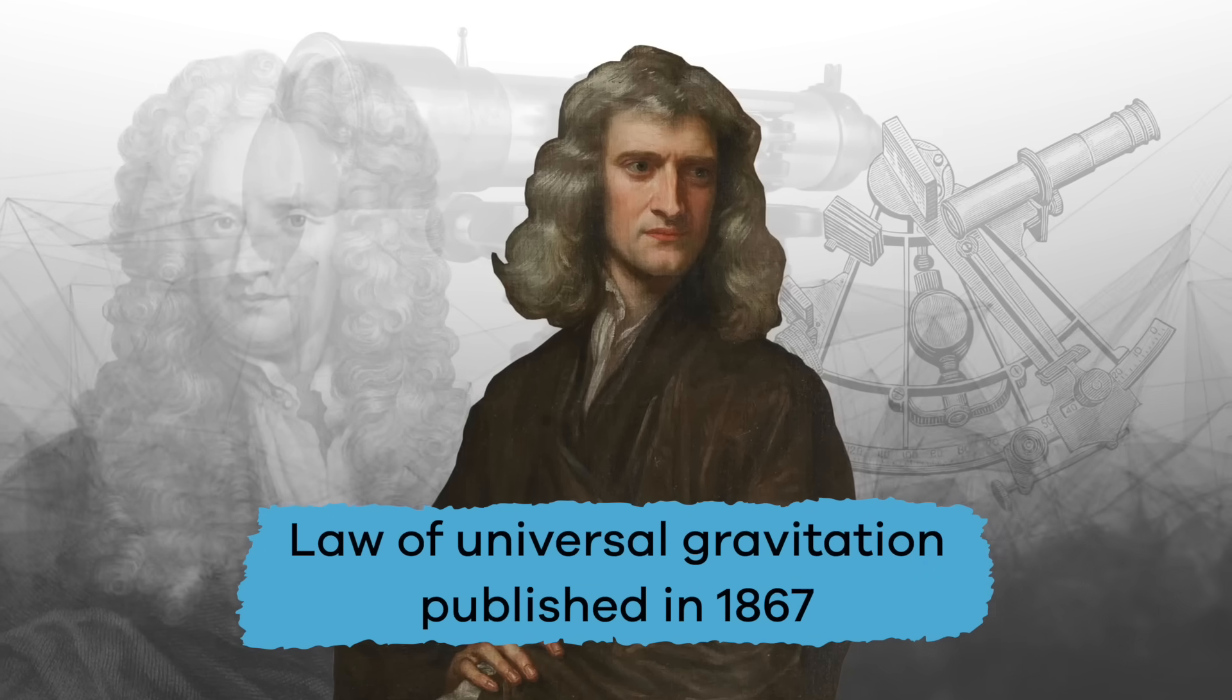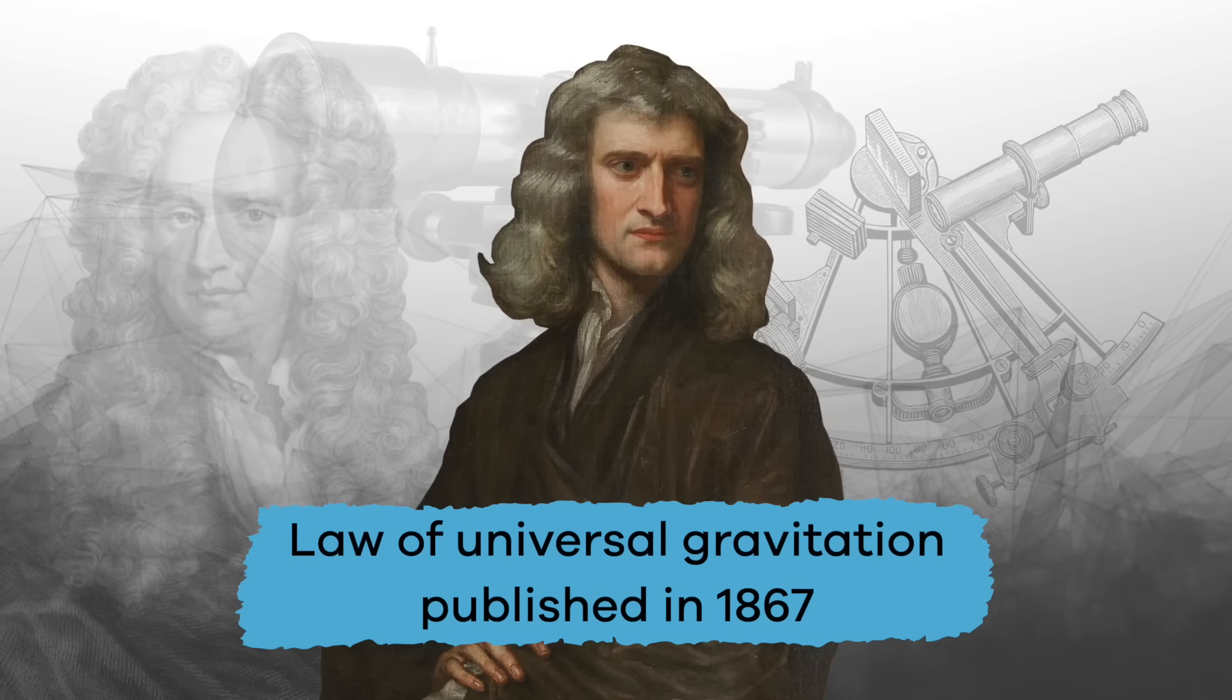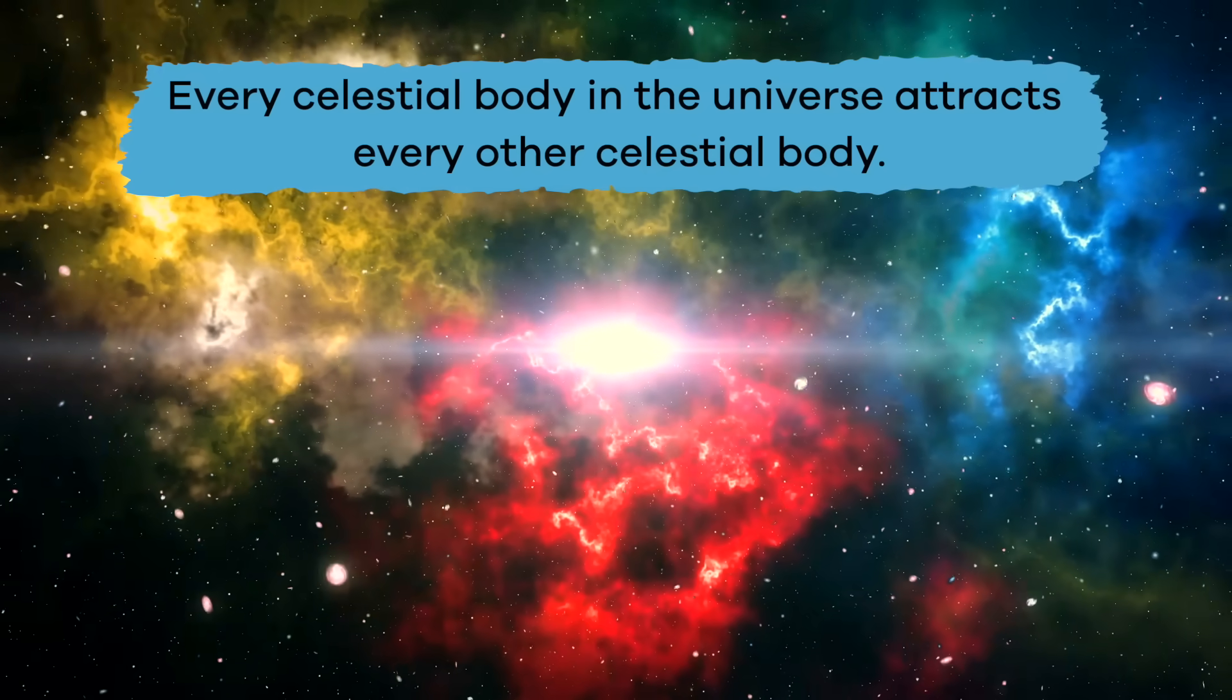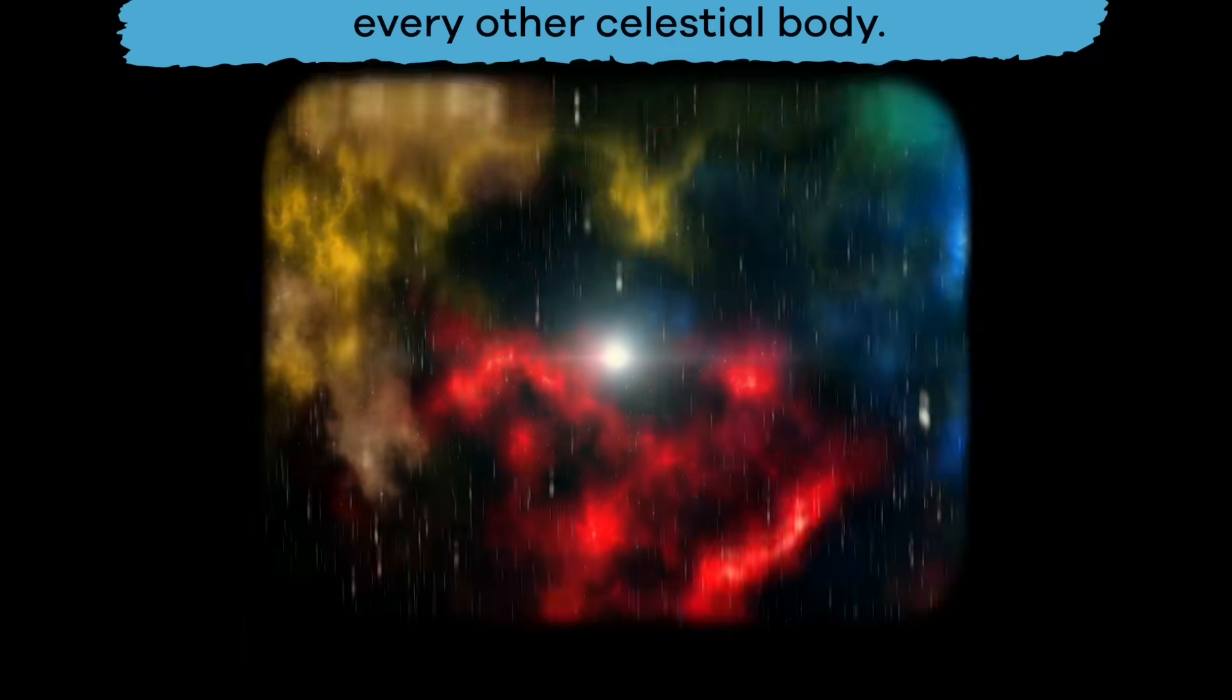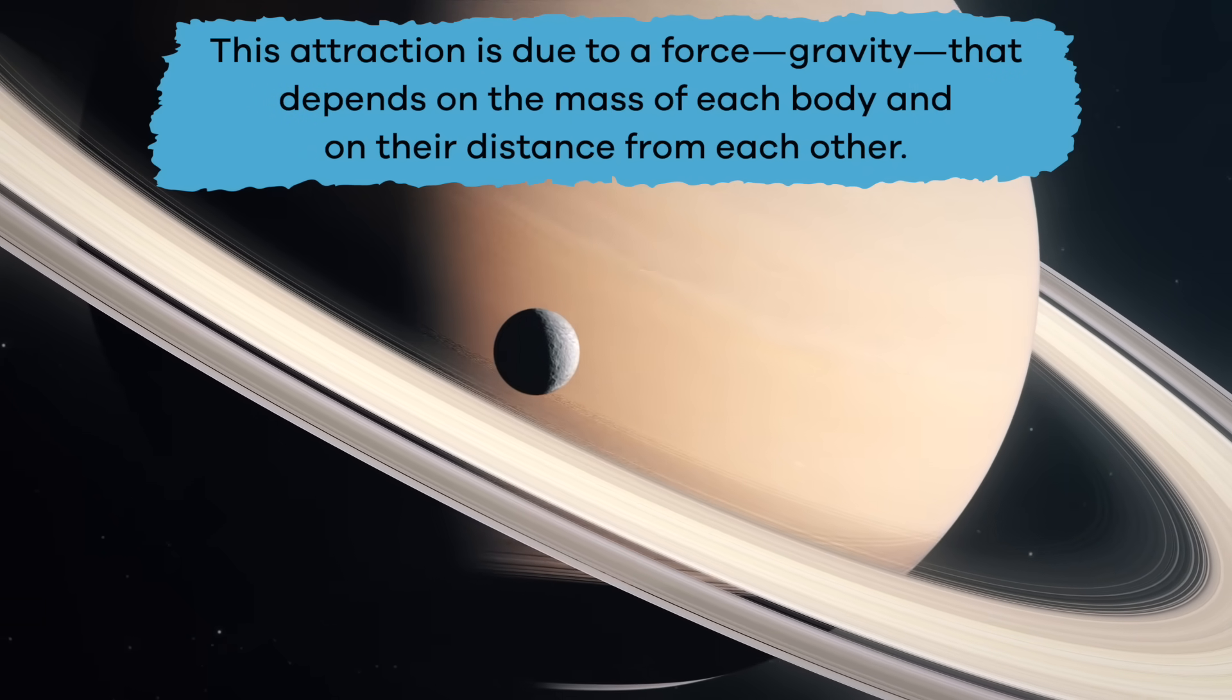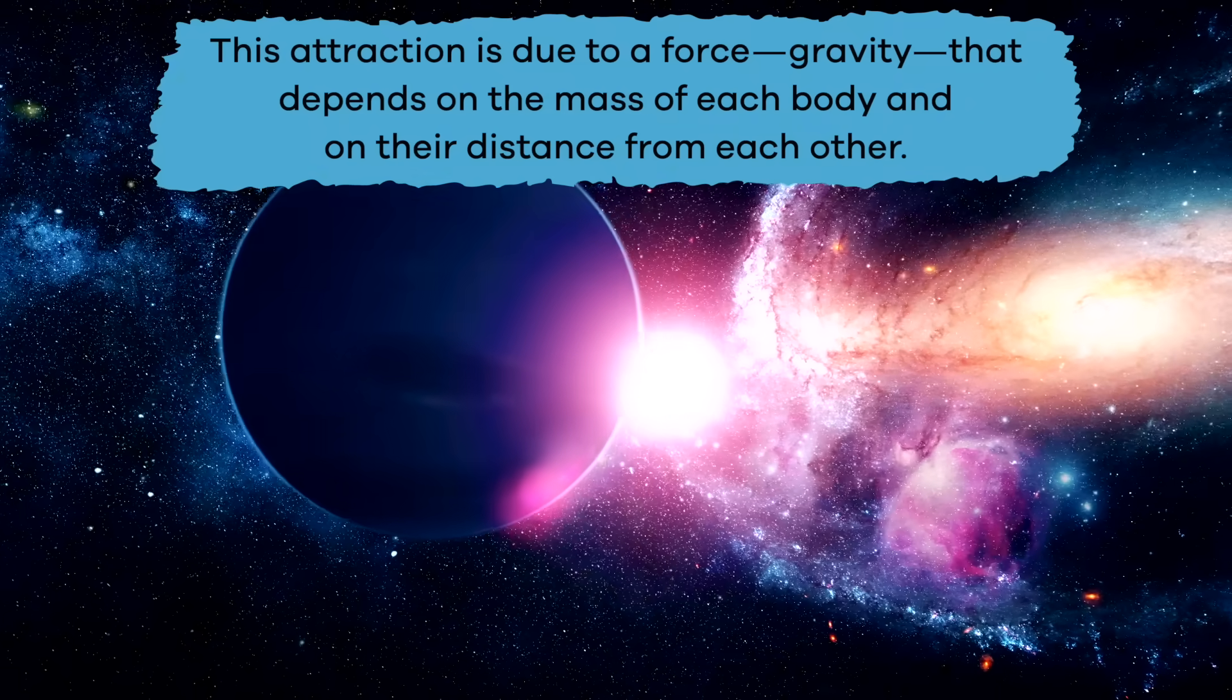Newton's Law of Universal Gravitation was published in 1687 and states that every celestial body in the universe attracts every other celestial body. This attraction is due to a force, gravity, that depends on the mass of each body and on their distance from each other.